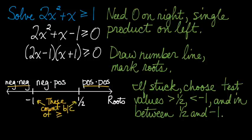Additionally, I want to count negative 1 and 1 half. Why? Because the inequality says greater than or equal to 0, and at those two numbers,